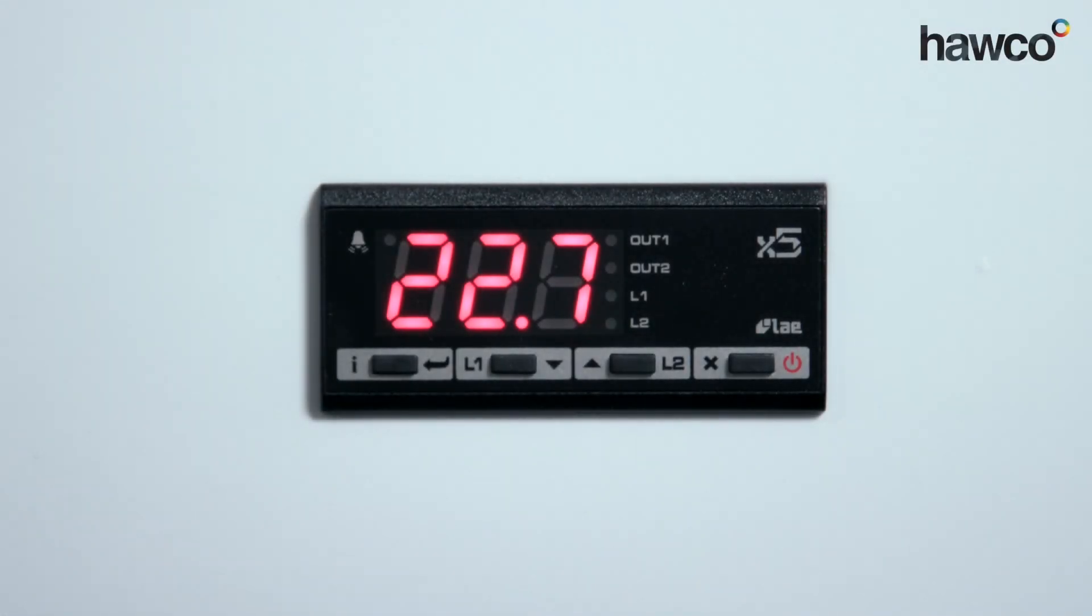Hello, we're talking about the AC1-5 from LAE. The great thing about this controller is that you can use both the relays, one can be for heating and one can be for cooling, so you can set up a dead band control. In this scenario, we're going to set up relay one to be our refrigerator, relay two to be our heater.